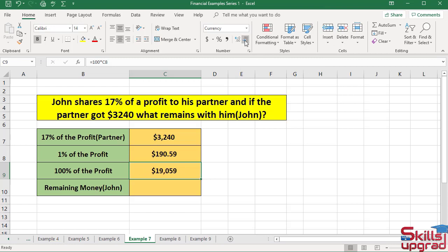So John has a total profit of $19,059. He gives $3240 to his partner. What is the remaining money for John?